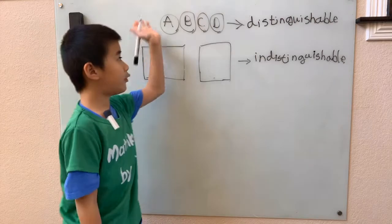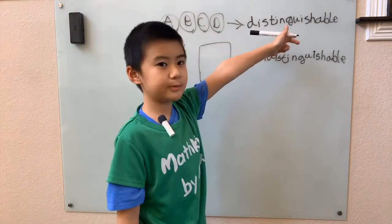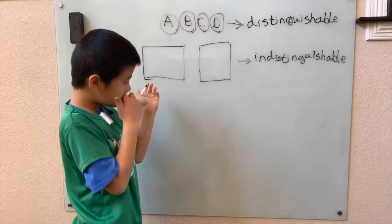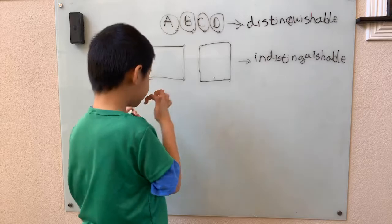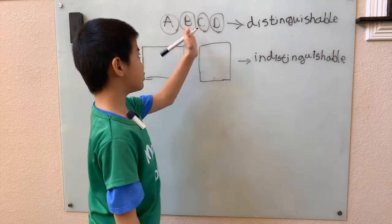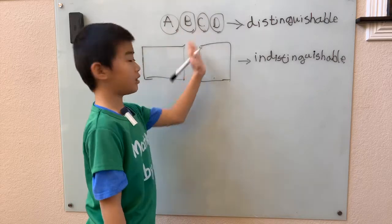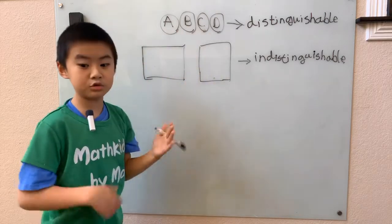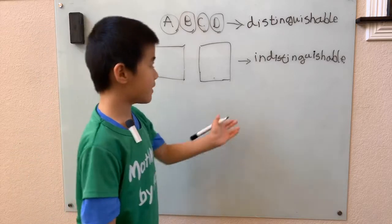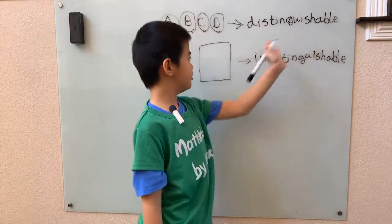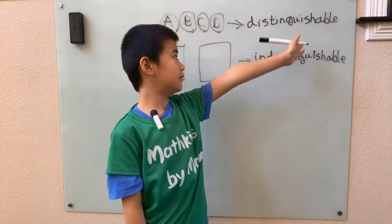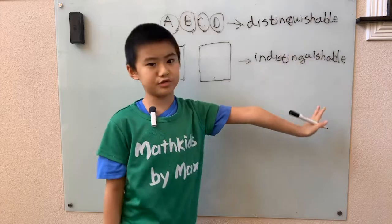I have four distinguishable balls and two indistinguishable boxes. How many ways are there to arrange the balls in these two boxes? Well, first we gotta talk about what these two huge words mean: distinguishable and indistinguishable.